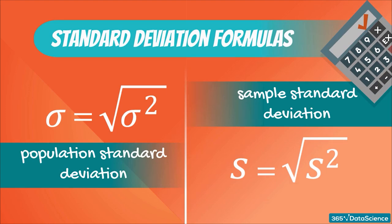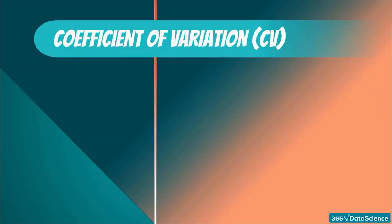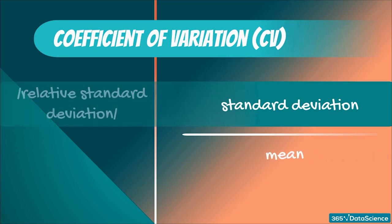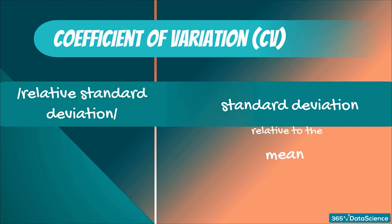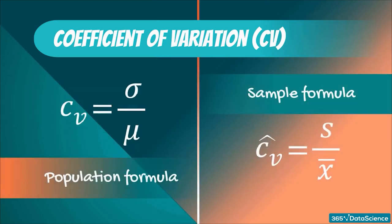The other measure we still have to introduce is the coefficient of variation. It is equal to the standard deviation divided by the mean. Another name for the term is relative standard deviation — it is simply the standard deviation relative to the mean. There is a population and sample formula once again.